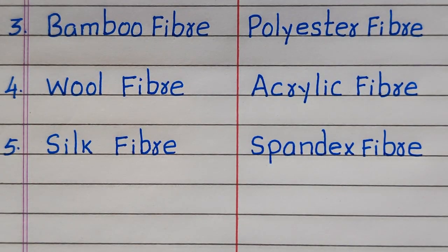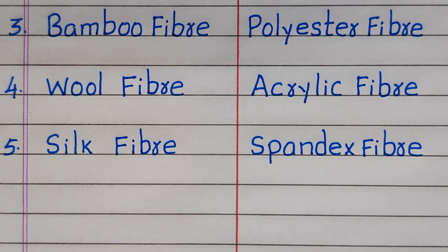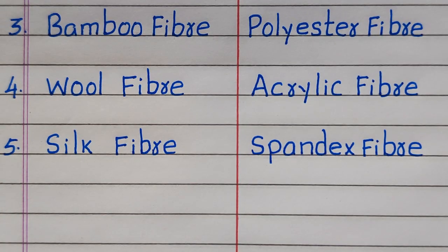Third example of a natural fiber is bamboo fiber. Fourth wool fiber, fifth silk fiber. Third example of synthetic fiber is polyester fiber. Fourth acrylic fiber.